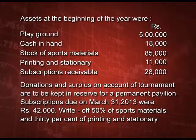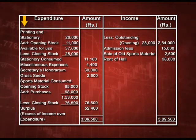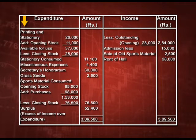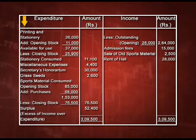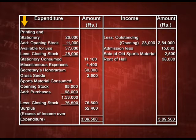Now we calculate sports material consumed during the year. Opening stock of sports material is rupees 85000. During the year we purchased sports material of rupees 68000, giving rupees 153000. The additional information states write off 50 percent on sports material, so 50 percent of 153000 is rupees 76500. We deducted rupees 76500 as the closing stock, and the sports material consumed figure is also rupees 76500.